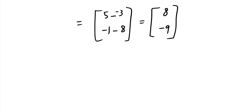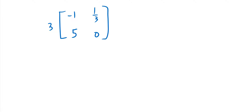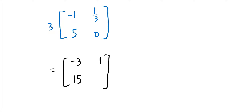For scalar multiplication, say we have 3 times the matrix [-1, 5; 1/3, 0]. We multiply the scalar 3 by each entry inside: 3×(-1) = -3, 3×(1/3) = 1, 3×5 = 15, and 3×0 = 0. You must multiply the scalar by every entry in the matrix.